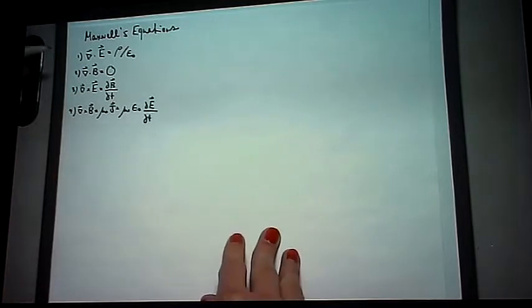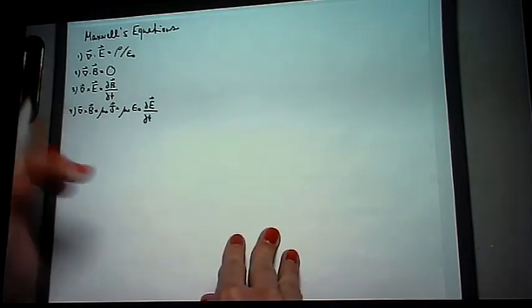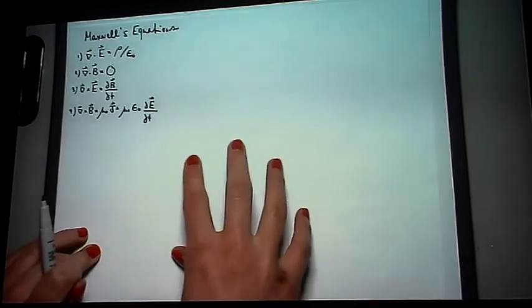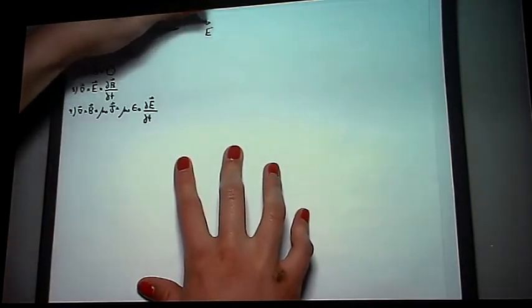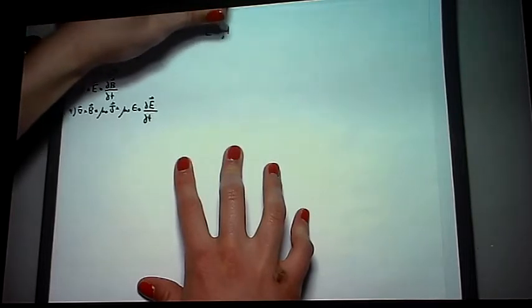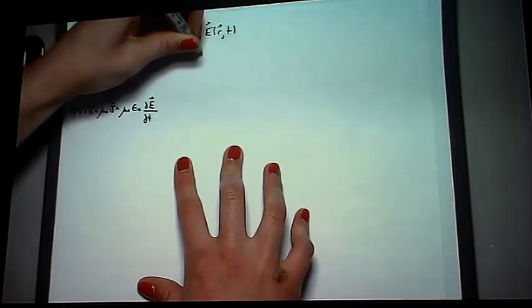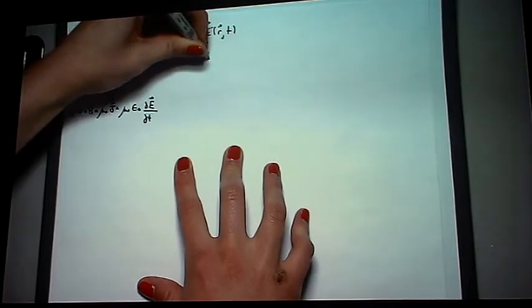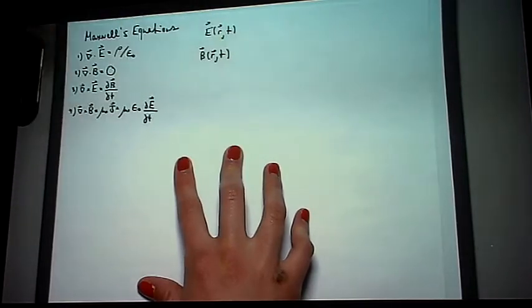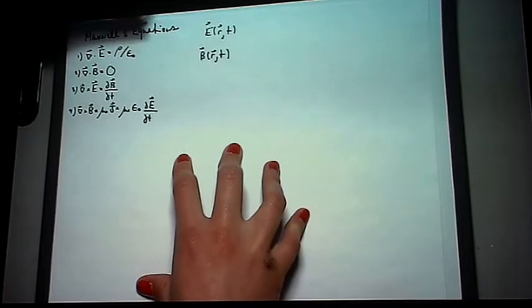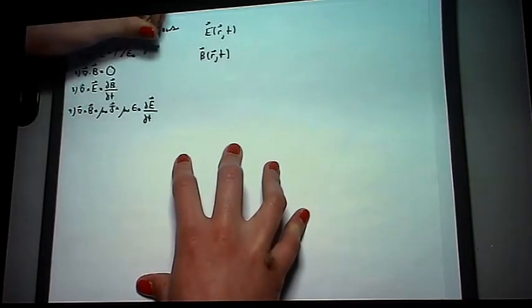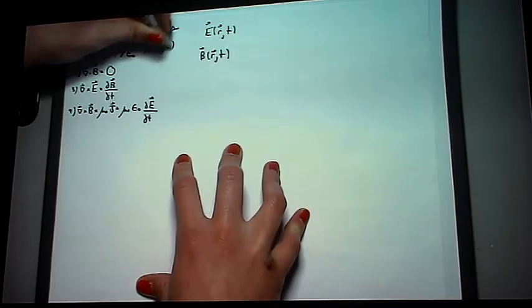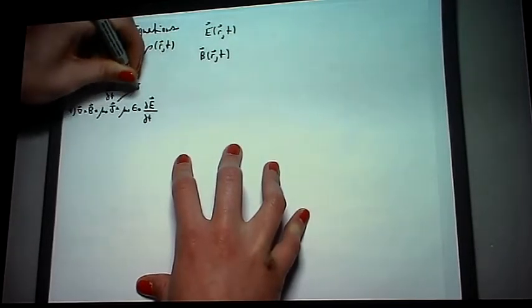Maxwell's equations are the following: 1, 2, 3, and 4. So, let's start by finding the electric field with respect to position and time, and the magnetic field with respect to position and time, given the charge and the current with respect to position and time.